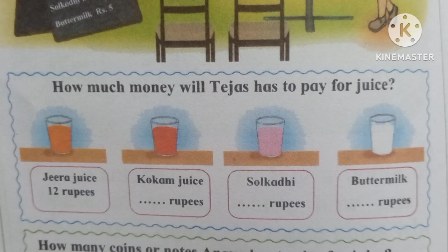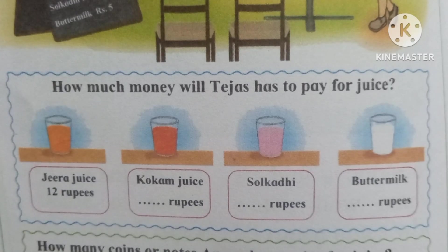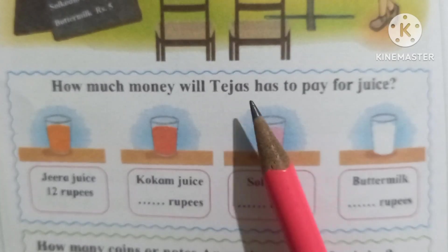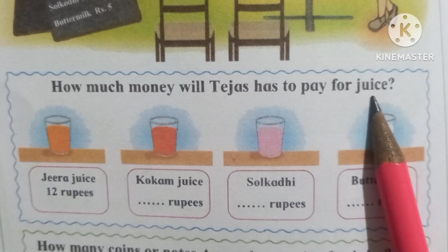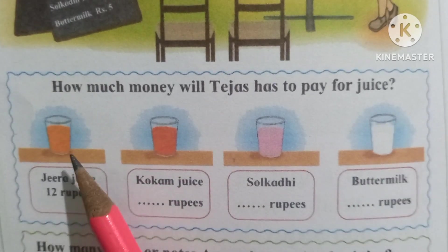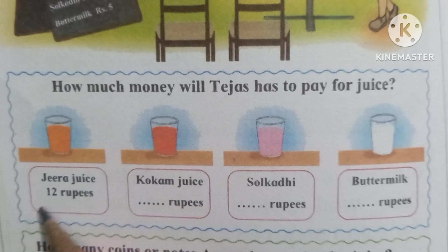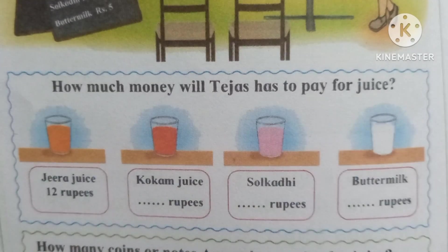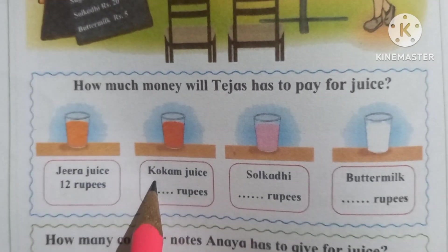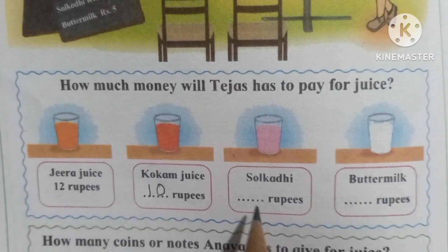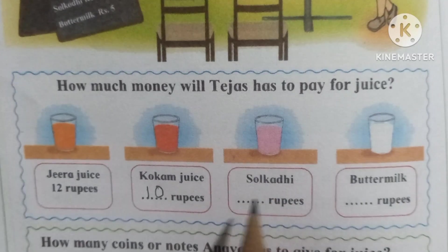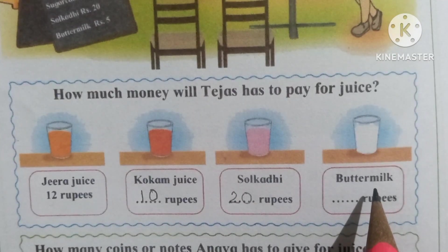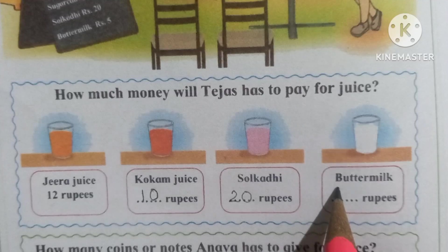From this picture, we have to write the price of juice and find how much money Tejas has to pay. For jeera juice, Tejas will pay Rs. 12, using a note of Rs. 20. For sugarcane juice, Tejas will use Rs. 20. For buttermilk, Tejas will pay Rs. 5.